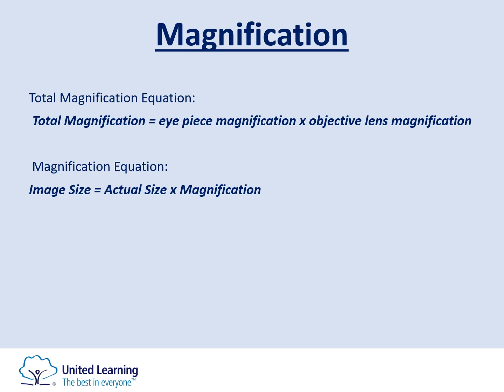The second equation is the magnification equation. Image size equals actual size times magnification, and you need to be comfortable rearranging it. If given actual size and magnification, that version is appropriate. If given image size and magnification, rearrange to: actual size equals image size divided by magnification. If given actual size and image size, magnification equals image size divided by actual size.